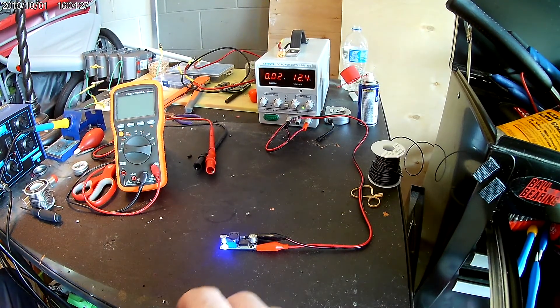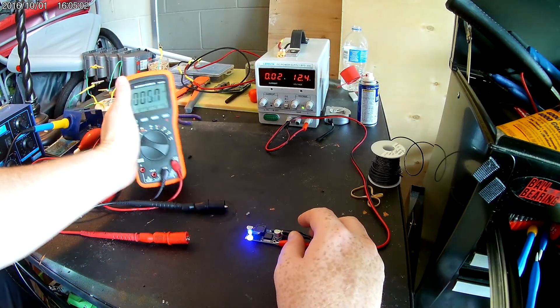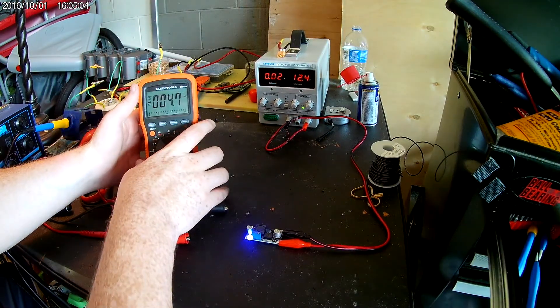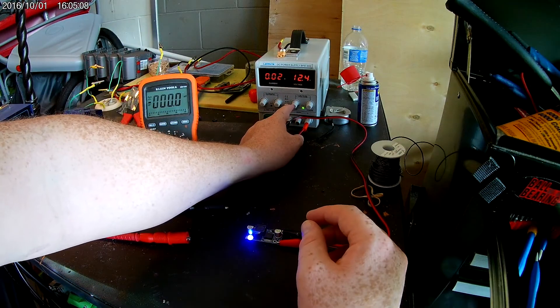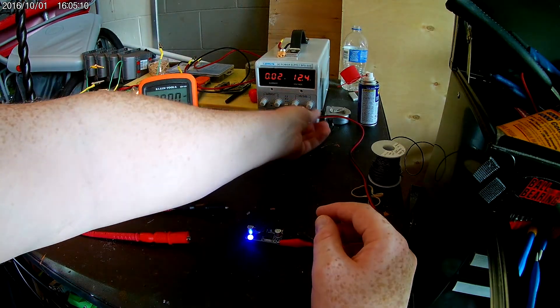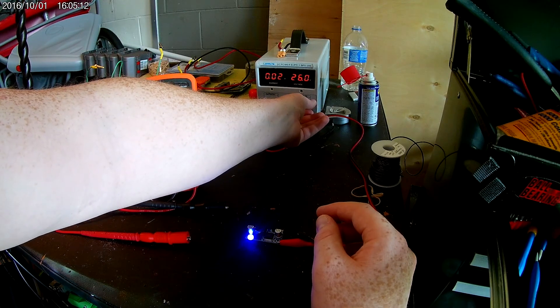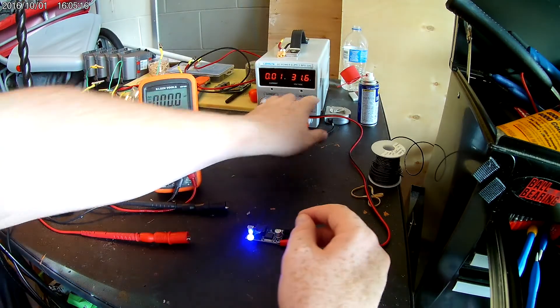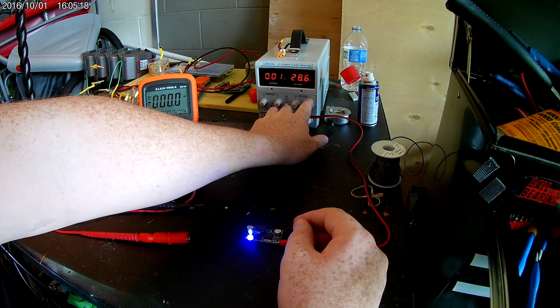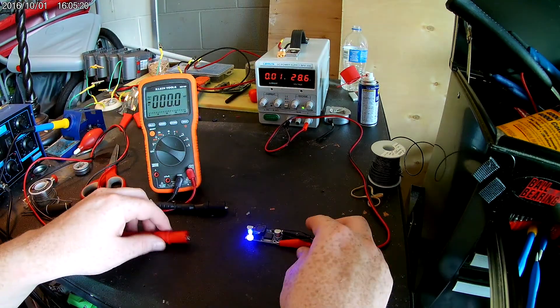Now, so I'm going to get my multimeter ready. I got it set to DC. And I'm also going to turn this, the voltage, up here. Let's go, let's go 30 volts. We'll go like 28 volts.